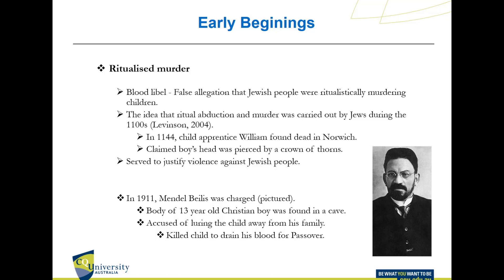One of the best places to start is looking at things going back to the 1100s and the case of blood libel, which involves false allegations of someone committing a ritualistic murder of children. According to Turvey, who has published on this matter, the blood libel is really one of the first documented cases of criminal profiling, which unfortunately resulted in the demonisation of Jewish people.